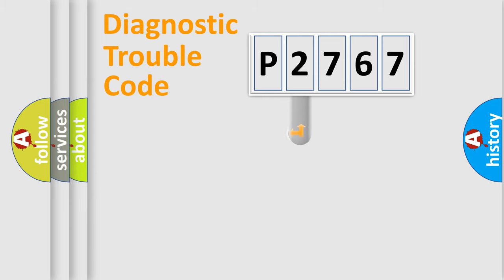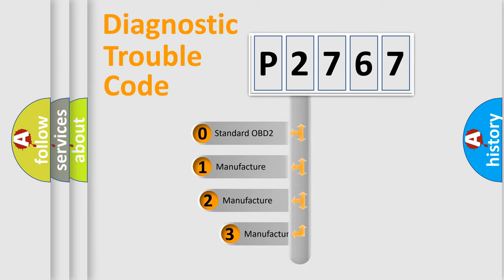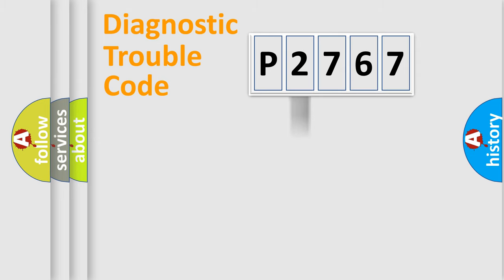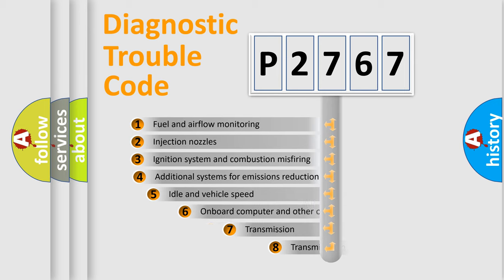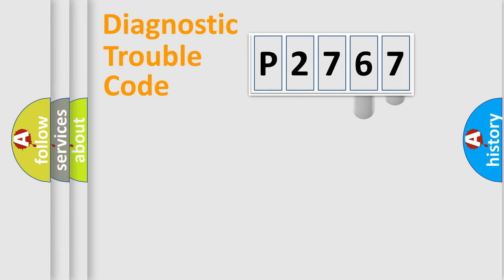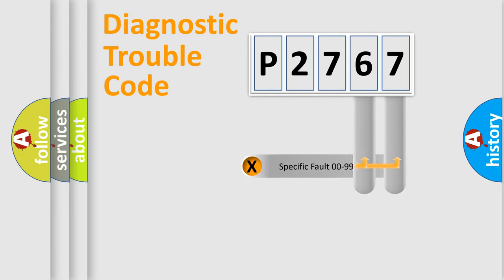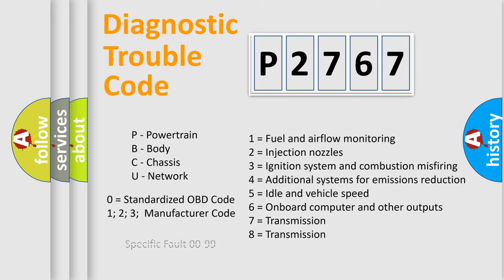This distribution is defined in the first character of the code. If the second character is expressed as zero, it is a standardized error. In the case of numbers 1, 2, or 3, it is a more specific expression of a car-specific error. The third character specifies a subset of errors. Only the last two characters define the specific fault of the group. This division is valid only when the second character is expressed by the number zero.